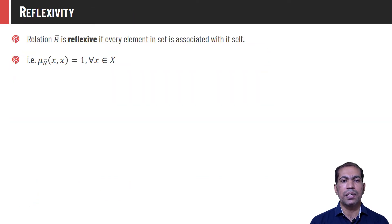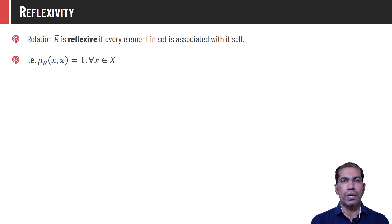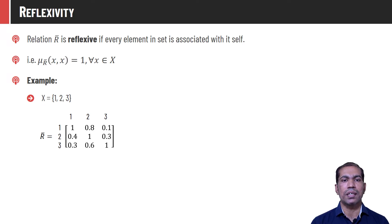A relation R̄ is said to be reflexive if every element in the relation is related with itself. That is, the membership value of tuple (x, x) in R̄ is 1 for all elements x in the universe X. Consider the universe X = {1, 2, 3}. The relation defined on the Cartesian product X×X is as shown here — for any tuple (x, x), the membership value is 1, and hence this relation is a reflexive relation.